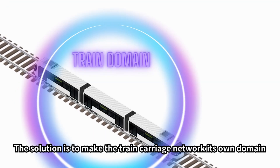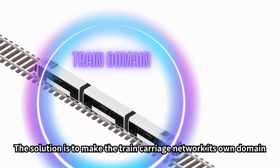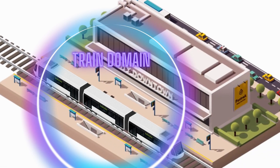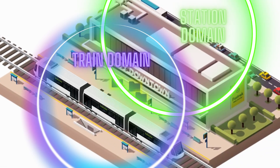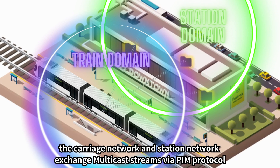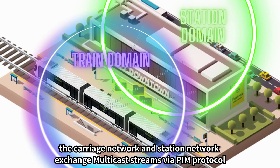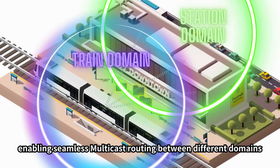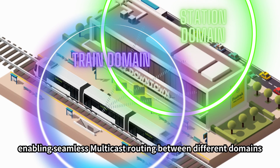The solution is to make the train carriage network its own domain. When the train stops at a station, the carriage network and station exchange multicast streams via PIM protocol, enabling seamless multicast routing between different domains.